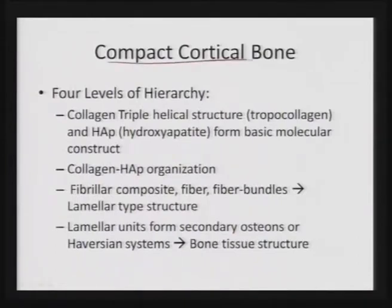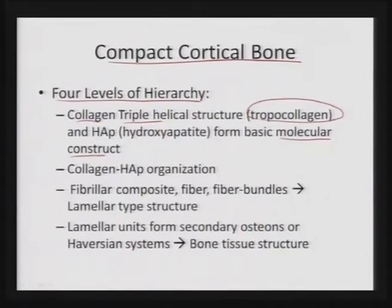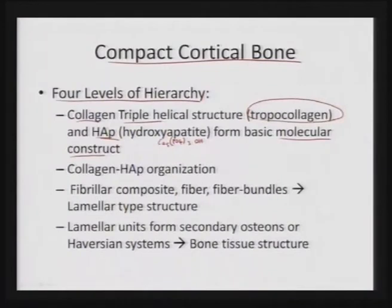Learning about the compact cortical bone structure, as we said earlier, there are four levels of hierarchy. In the first case, we are talking about a basic molecular construct comprising the collagen triple helical structure, also called tropocollagen, and the arrangement of hydroxyapatite within it. Collagen and HAP form the basic molecular construct. HAP is defined as Ca₅(PO₄)₃OH with two such units in a unit cell, giving Ca₁₀(PO₄)₆(OH)₂. Then this HAP starts spreading both in the inter and intra fibrillar regions of collagen, forming the second level of construct called ultra structural.